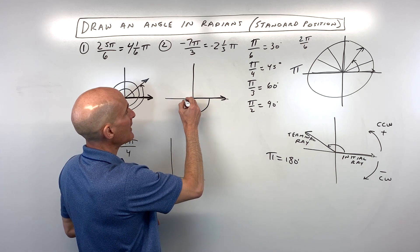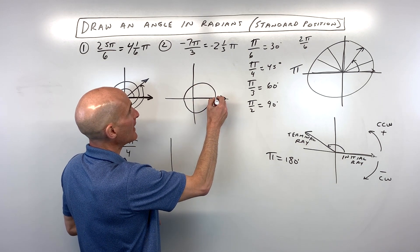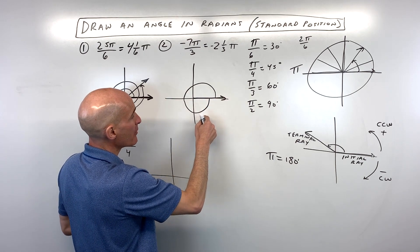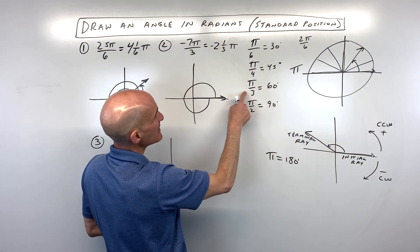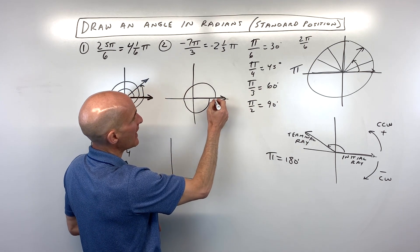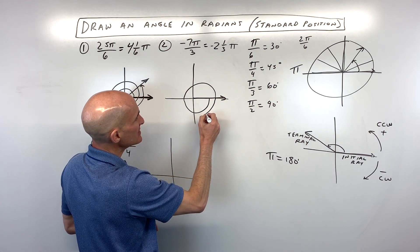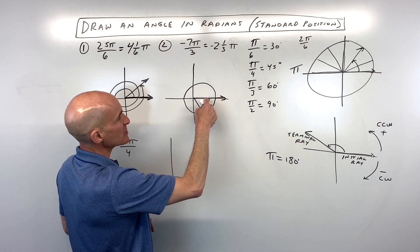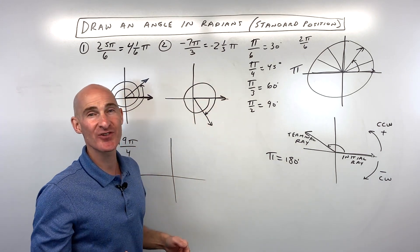Let's start over here at the positive x-axis. That's our initial ray. We're going 1 pi, 2 pi. And now we're going, that would be 3 pi, but we're just going a third of the way. We know that pi over 3, see 1 3rd pi is the same as pi over 3. You know that's a 60 degree angle. So we're going like about 60 degrees more. And that's our terminal ray. So we basically went 1 revolution plus another 60 degrees.